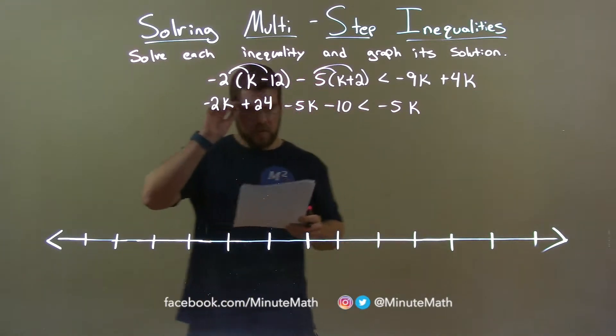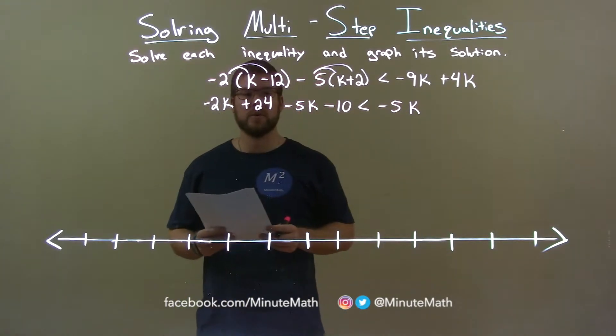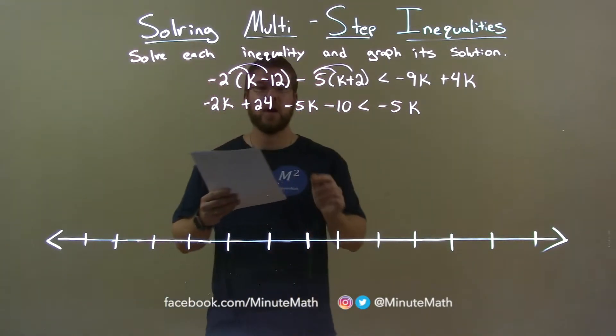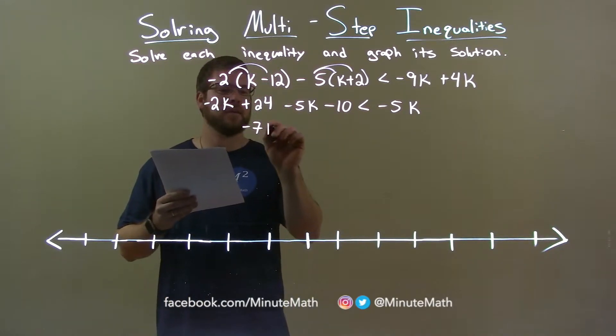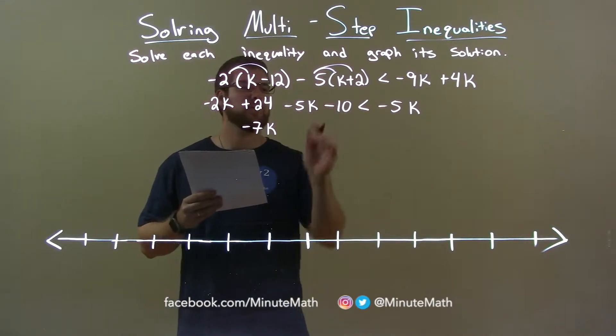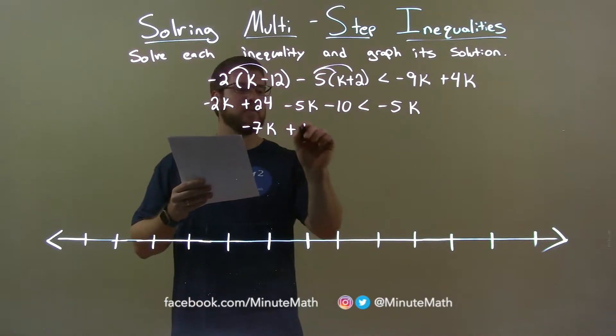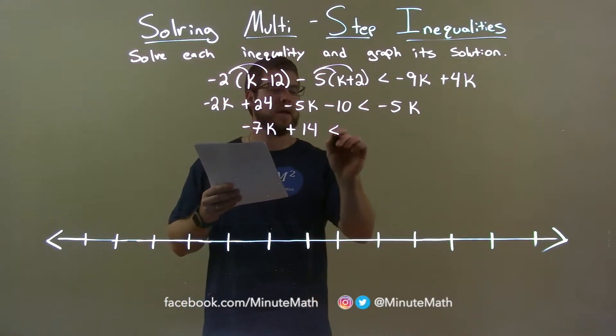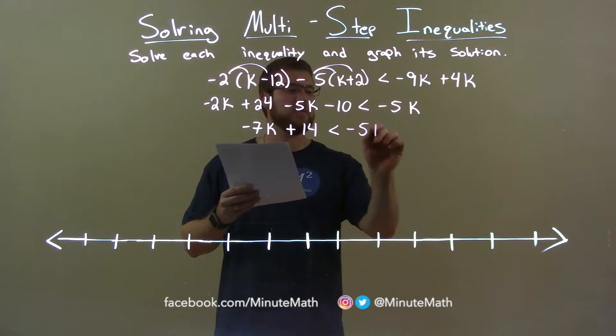Alright, so the left-hand side, let's combine our like terms here. Negative 2k and negative 5k is negative 7k there. 24 and minus 10 become positive 14 and it's still less than negative 5k.